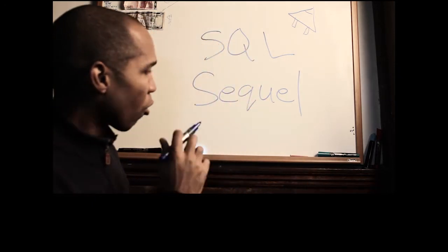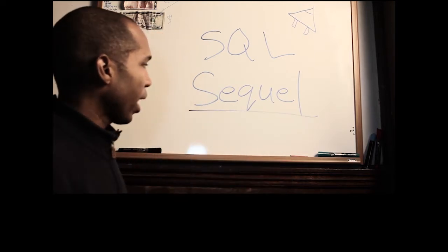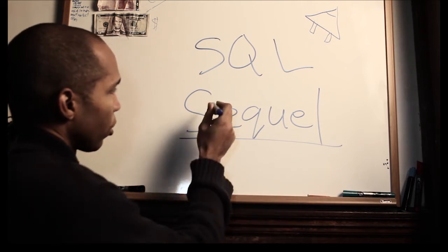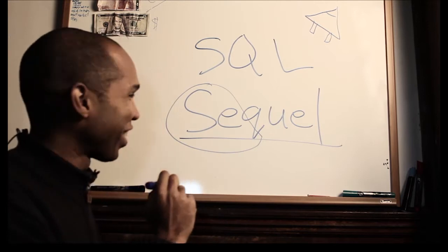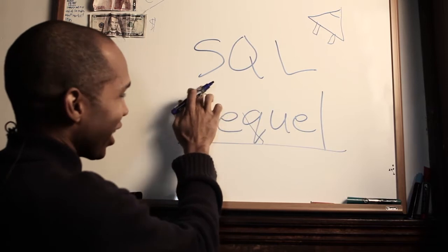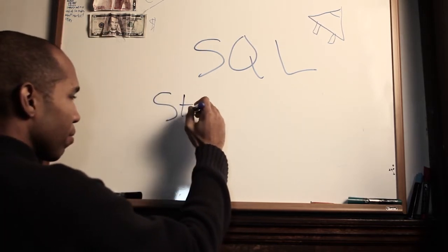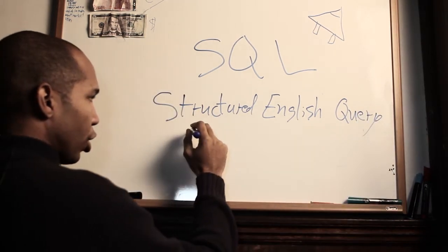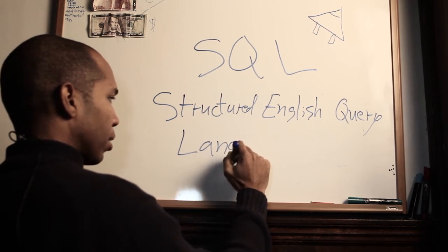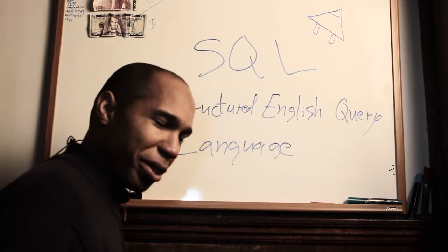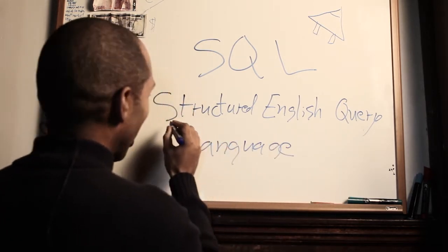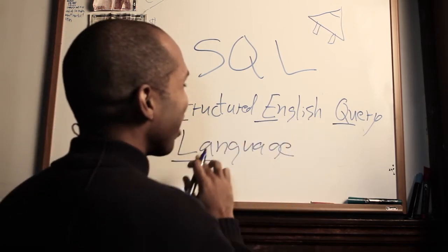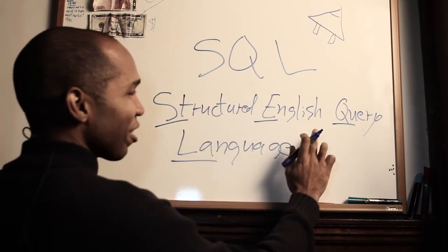How can it be both? Well, originally it was SQL, which stands for Structured English Query Language. So if you break it up: S — Structured, Q — English... wait, no. S — Structured. E — English. Q — Query. L — Language. That's S-Q-L: Structured English Query Language.